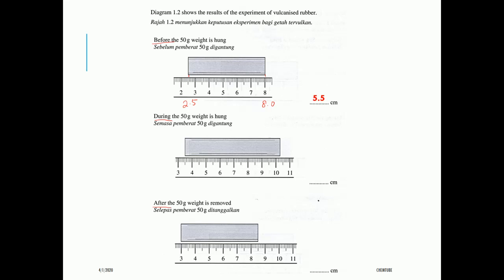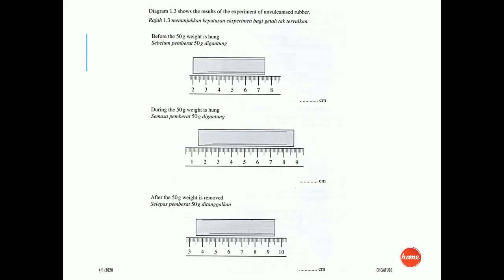For the ruler reading we need to round to 1 decimal place, so it's 5.5. During the weight hung: 6.8; after the weight is removed: 5.5. For unvulcanized rubber, the initial length is also 5.5, during the weight hung: 7.3, after the weight is removed: 6.6. If the student records all readings correctly they get score 3. Score 2 requires 4 correct readings; score 1 requires 3 correct readings.